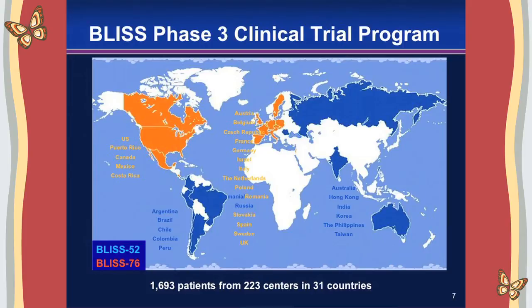The phase three clinical program started in 2006 and was fully enrolled in 2008, comprising nearly 1,700 patients in 223 investigative sites across 31 countries. There were two trials: BLISS-52, which was 52 weeks long, done primarily in Asia Pacific and Latin America; and BLISS-76, which was 76 weeks long, done primarily in North America and Western and Central Europe.